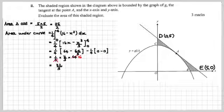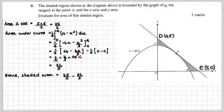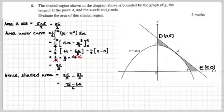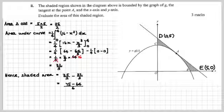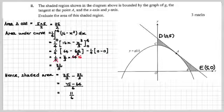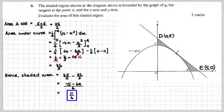Therefore the area of the shaded region will be the area of the triangle minus the area under the curve. When you find the LCM — in terms of 6 — you get 11 over 6. That's the answer, so we've knocked that one off as well.